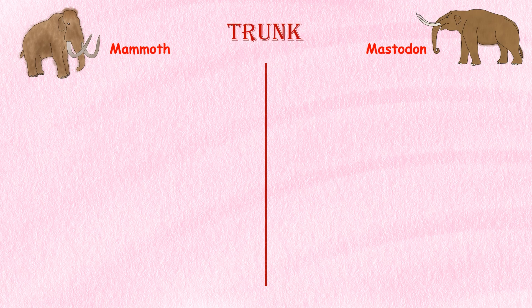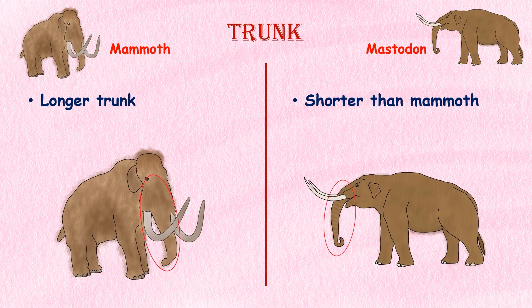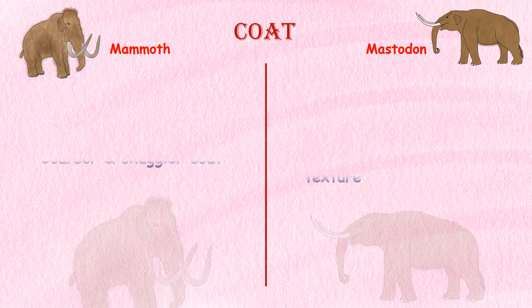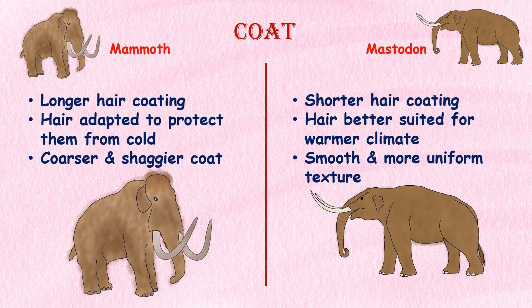Trunk. Mammoths had longer trunks than Mastodons relative to their height, which were capable of reaching the ground and grasping vegetation. Coat. Mammoths had longer hair than Mastodons. Their hair could grow up to 1 meter in length and was adapted to protect them from the cold. Mastodons, on the other hand, had shorter hair that was better suited for warmer climates. The hair of mammoths was coarser and shaggier than that of Mastodons.